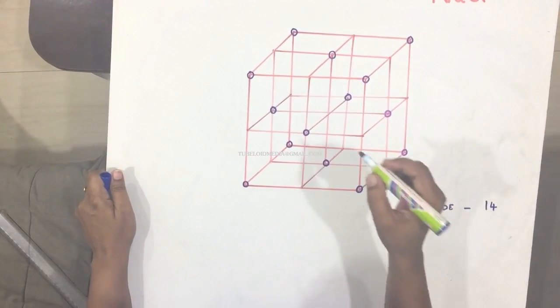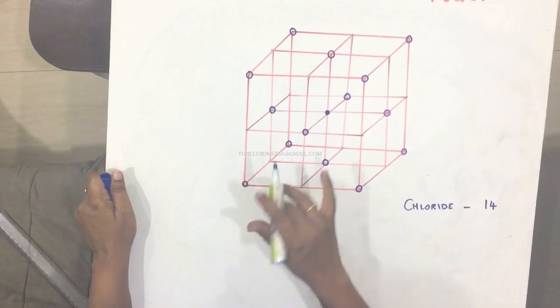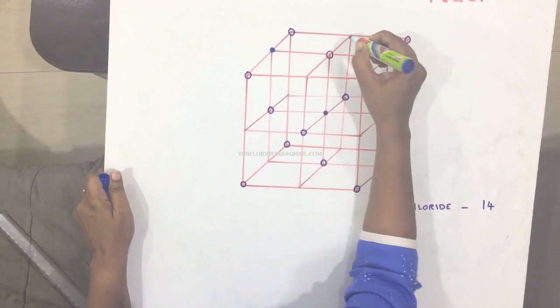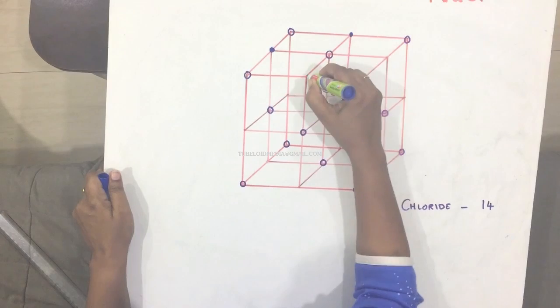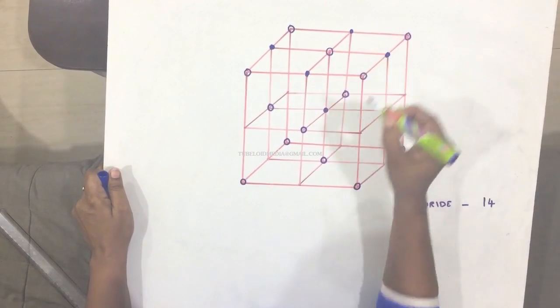Now we will go for sodium. So sodium is always center point here. One. And now the rest we have sodium. One, two, three, four, five.